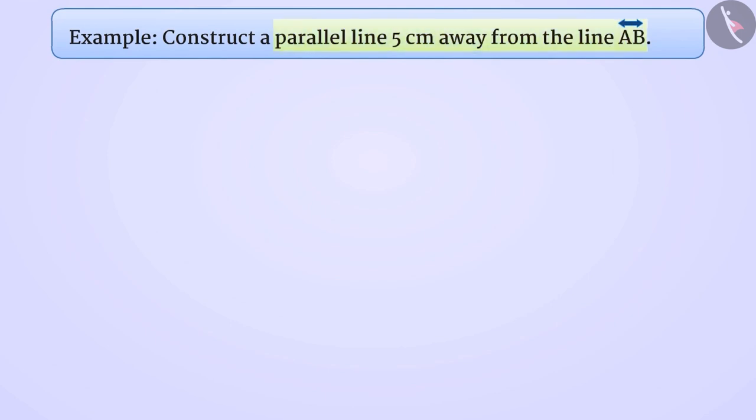Here we have to construct a line parallel to AB at a distance of 5 cm. Can you tell us how can we do that? Think for a while. We will explain.